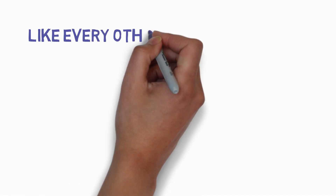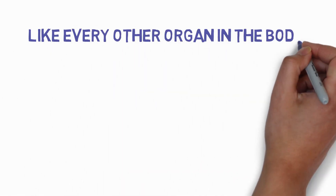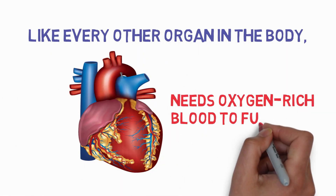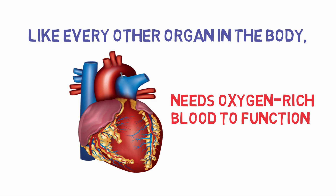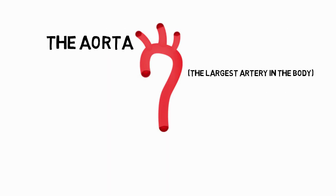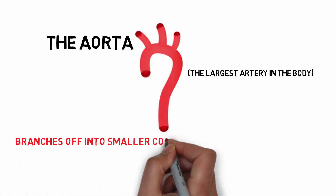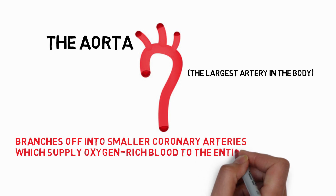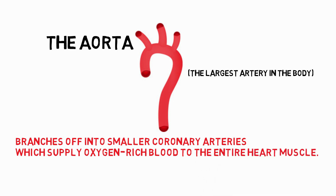Like every other organ in the body, the heart needs oxygen-rich blood to function. The aorta branches off into smaller coronary arteries which supply oxygen-rich blood to the entire heart muscle.